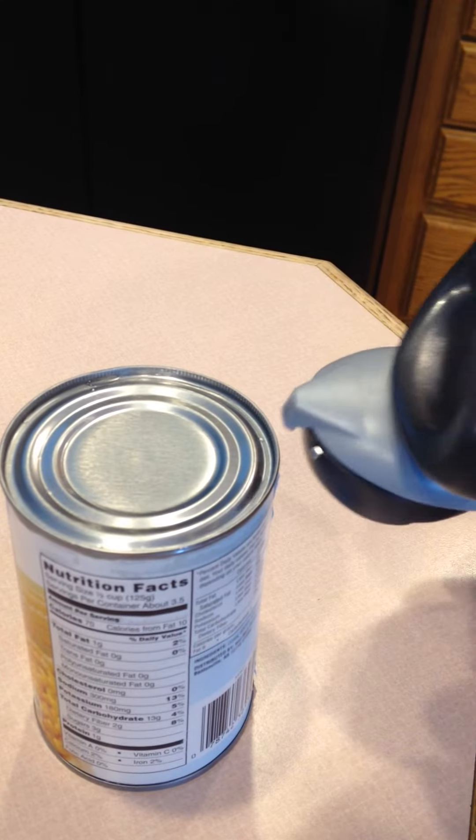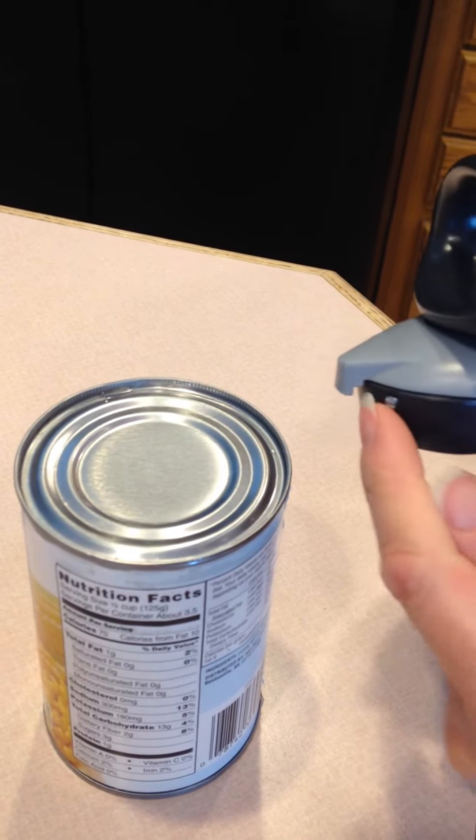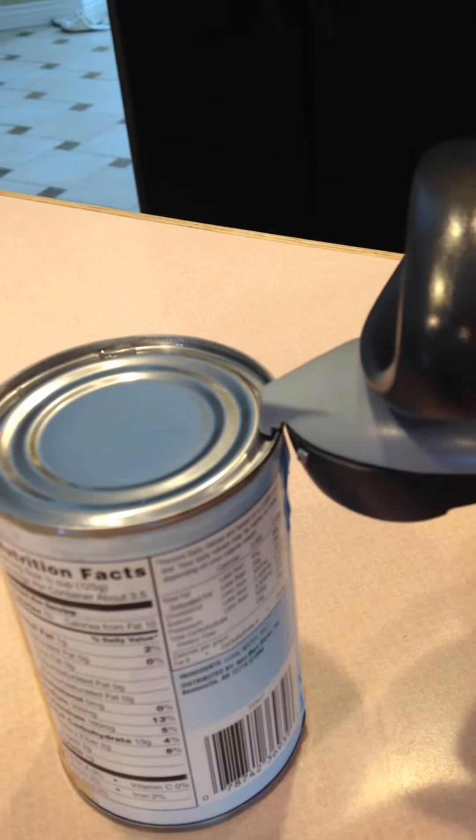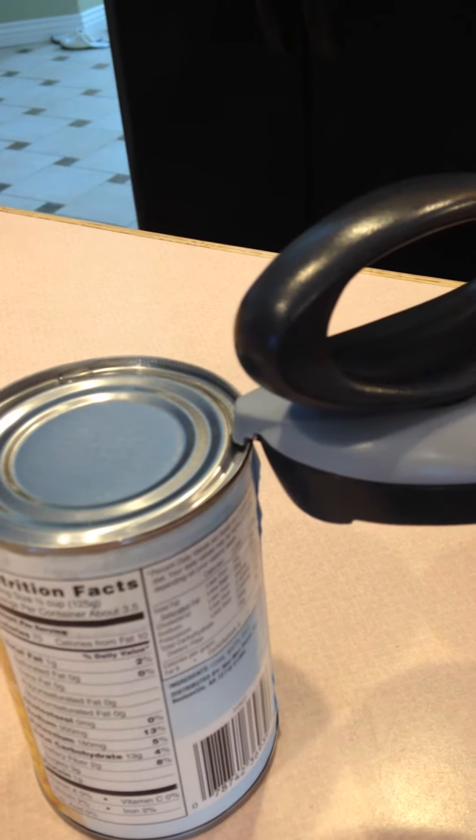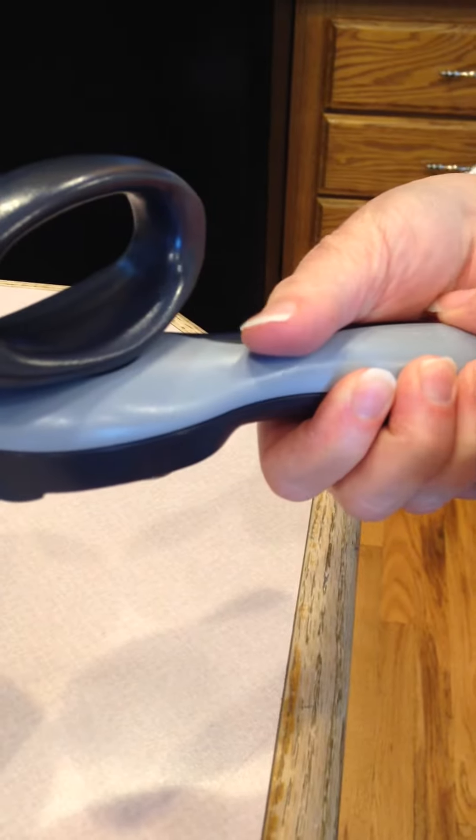You have to use the gripper here. Place the gray gripper right on top of the lip of the can and close once again. The handles need to be shut.